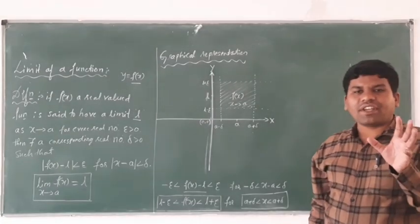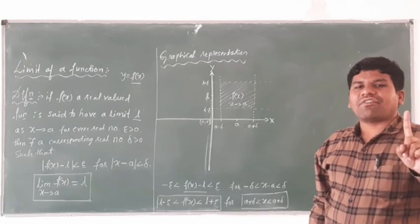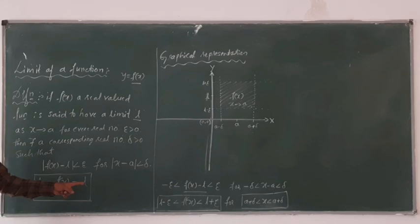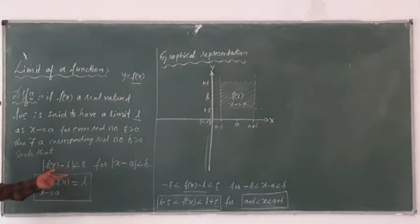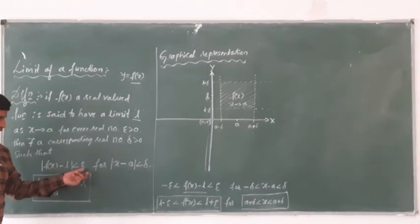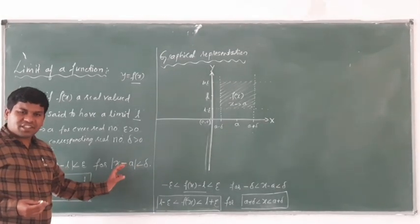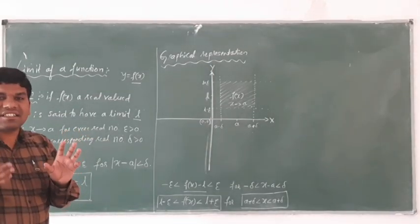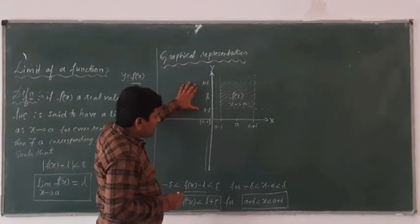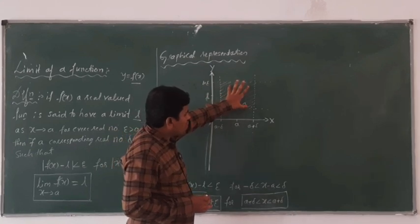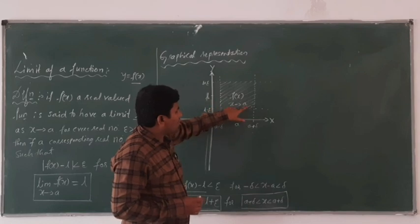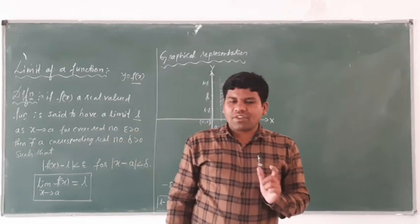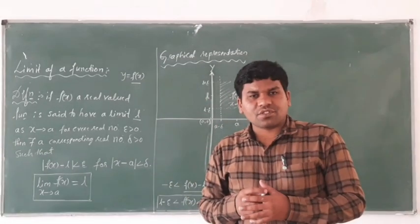This is called the graphical representation of the limit of a function. Whatever you are going to define in mathematics, try to represent it in graphs. The limit of a function means the limit of F of X equals L. Mathematically: modulus of F of X minus L less than epsilon, for modulus of X minus a less than delta. When you combine the equation and the definition in terms of a graph, then only you can understand the concept. This is the region where F of X is defined as X tends to a — that is why it is called the limit of a function. With this I conclude the definition of a limit and its graphical representation.